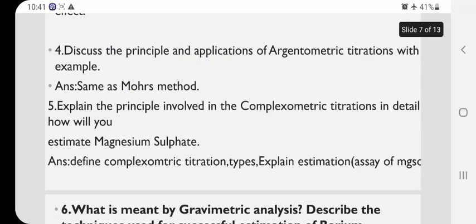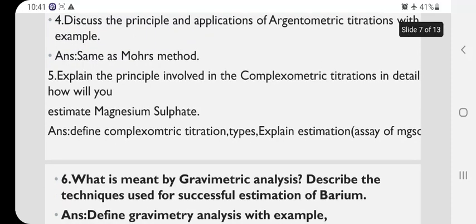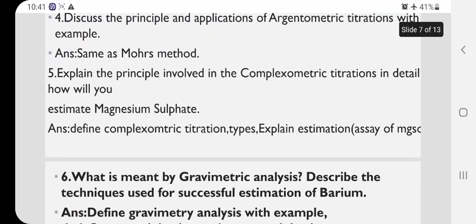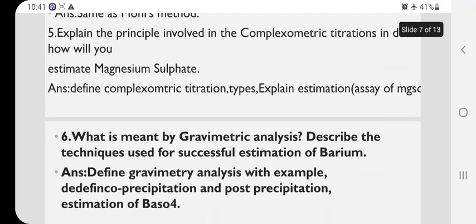Then explain the principle involved in the complexometric titration in detail. How will you estimate magnesium sulfate? This is complexometric titration. You have to define these types. Explain the estimation. Especially in magnesium sulfate, you have to write the assay.